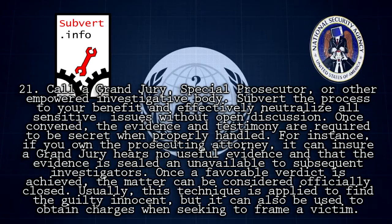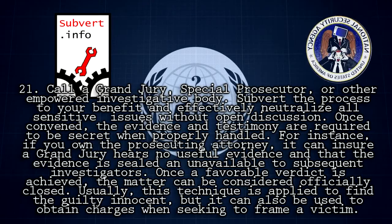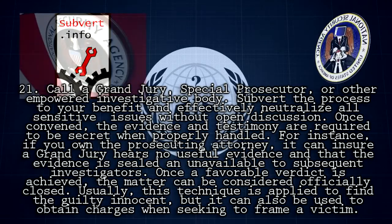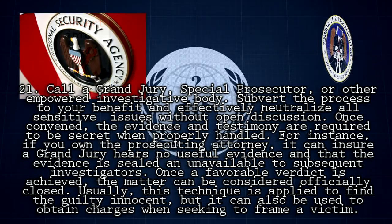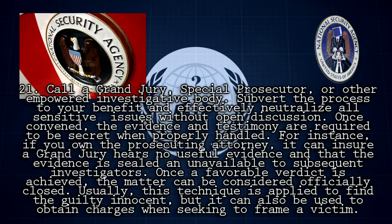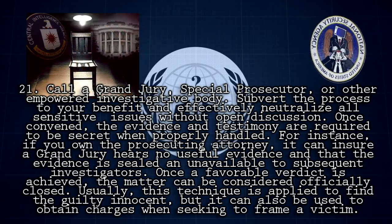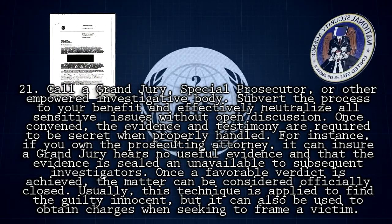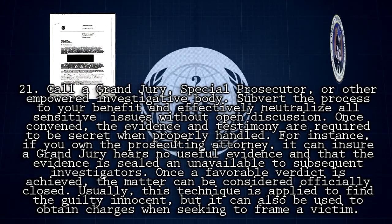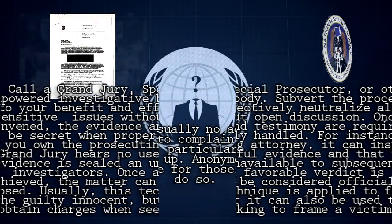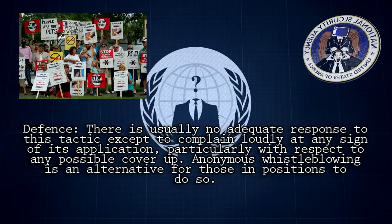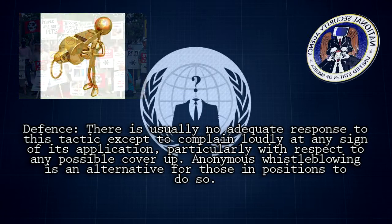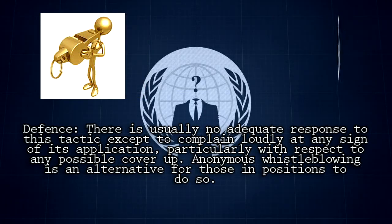Once a favorable verdict is achieved, the matter can be considered officially closed. This technique is usually applied to find the guilty innocent, but it can also be used to obtain charges when seeking to frame a victim. Example: According to one Oklahoma bombing grand juror who violated the law to speak the truth, jurors were — contrary to law — denied the power of subpoena of witnesses of their choosing, denied the power of asking witnesses questions of their choosing, and relegated to hearing only evidence the prosecution wished them to hear, evidence which clearly seemed fraudulent. Defense: There is usually no adequate response to this tactic except to complain loudly at any sign of its application, particularly with respect to any possible cover-up. Anonymous whistleblowing is an alternative for those in positions to do so.